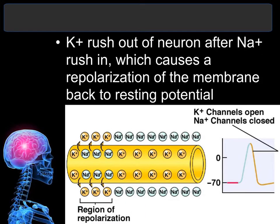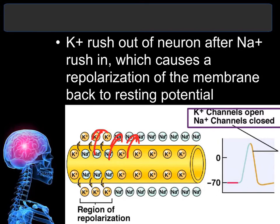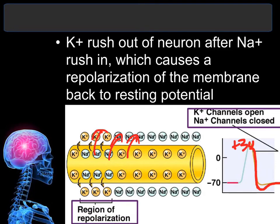As soon as plus 30 millivolts is reached and an action potential has happened, the sodium channels close and the potassium channels open, and potassium starts rushing out. As potassium leaves, the charge drops from plus 30 back to zero, then slightly below negative 70, and eventually levels back out at negative 70. This return to a negative charge is called repolarization — the neuron is becoming polarized again.